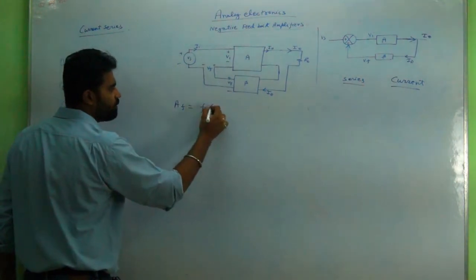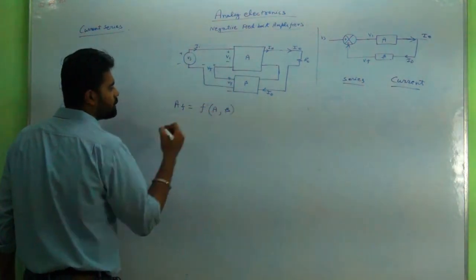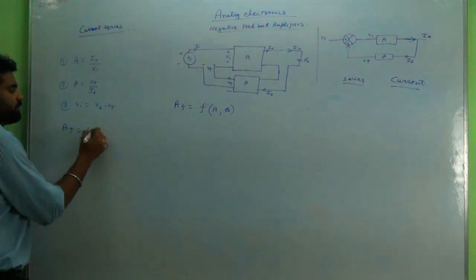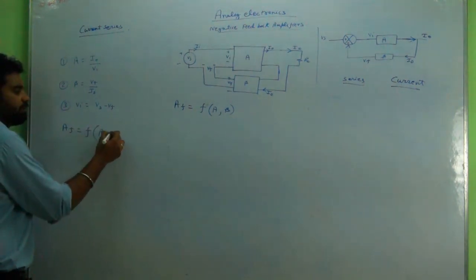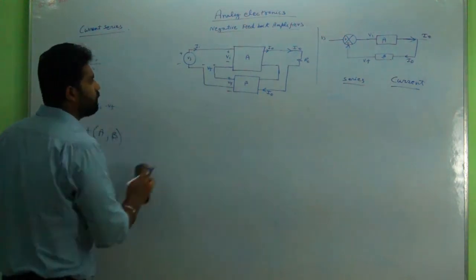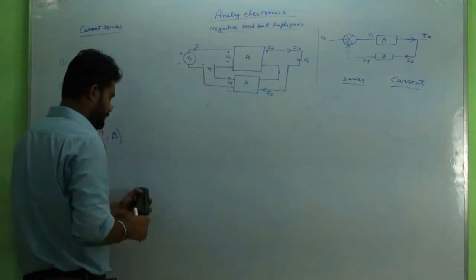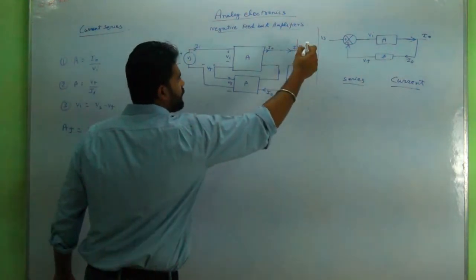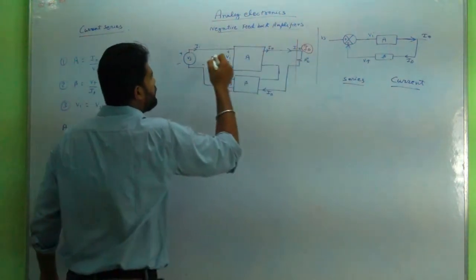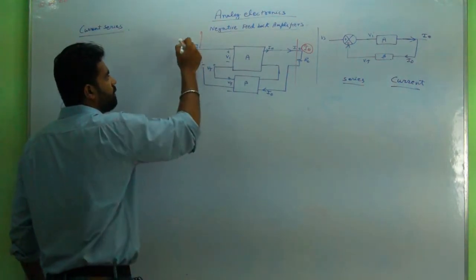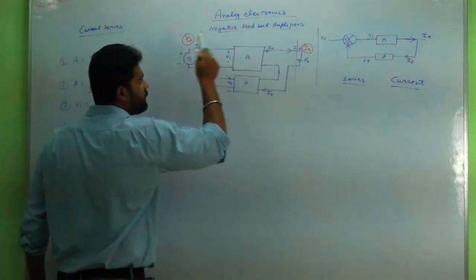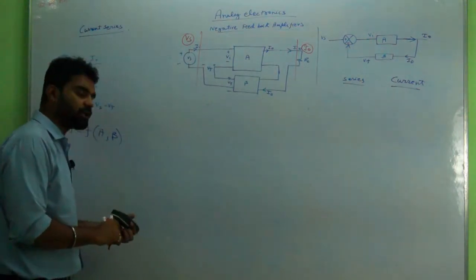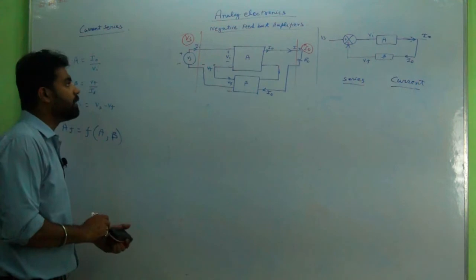I will write here that AF equals a function I have to derive in the form of A and beta. AF is I0 upon VS — the ultimate output we are getting is I0 and the ultimate input is VS. Because it is current series, output current and input voltage are considered.